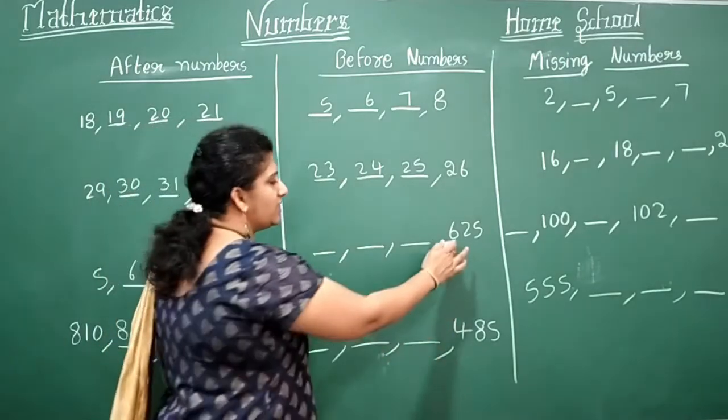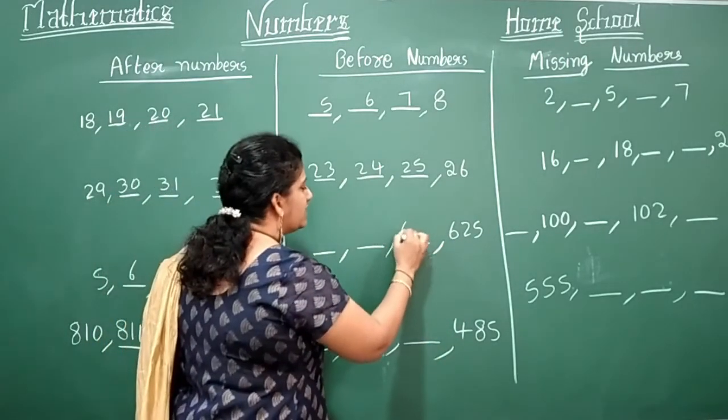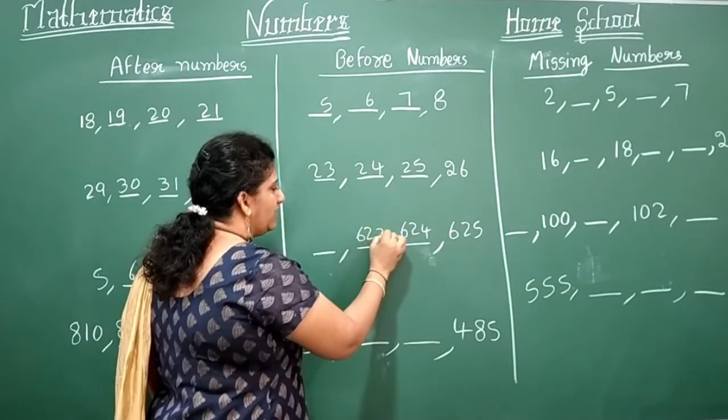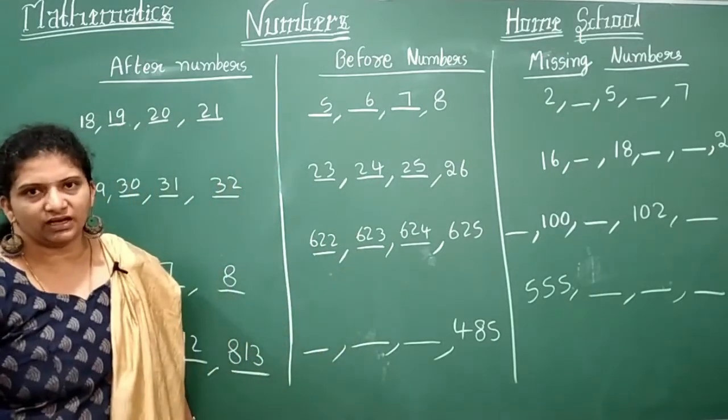Same manner. For 625, what is the backward number here? 624, 623, 622.